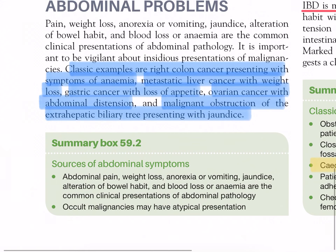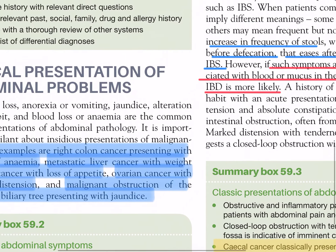Summary 59.2 — Sources of abdominal symptoms: abdominal pain, weight loss, anorexia or vomiting, jaundice, alteration of bowel habits, and blood loss or anemia are the common clinical presentations of abdominal pathology. Occult malignancies may have atypical presentations.